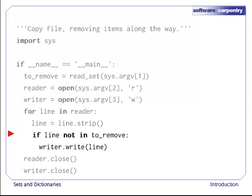These two lines are the heart of our program. If the bird name we just read is not in the set of names we're supposed to ignore, we print it out. Everything else in our program is really just there to support these two lines, a realization that we'll return to later when we talk about program design.